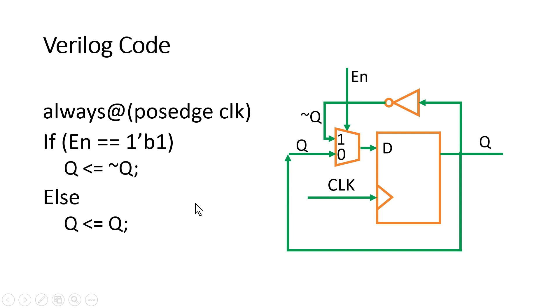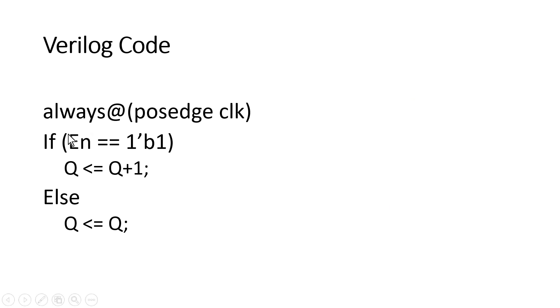Friends in the problem statement it was nowhere given that Q should be negated when enable is equal to high. The more precise behavioral code should be something like this. When enable is high Q should be equal to Q plus 1. Else Q should be equal to Q.